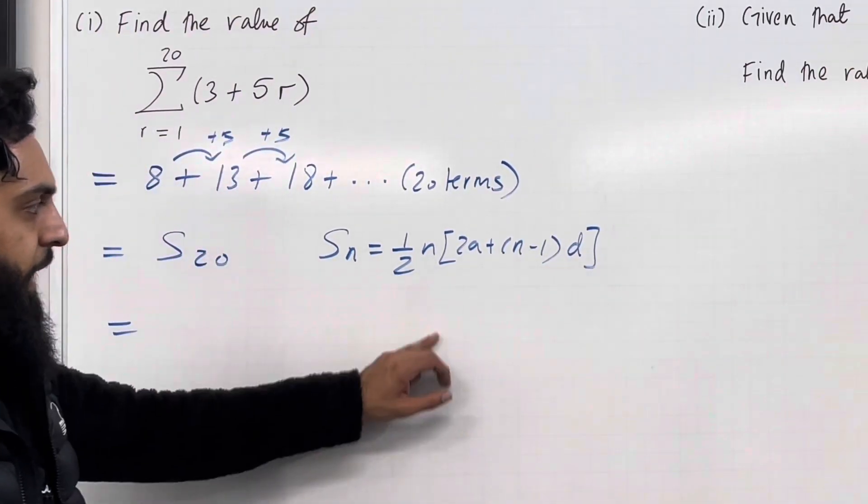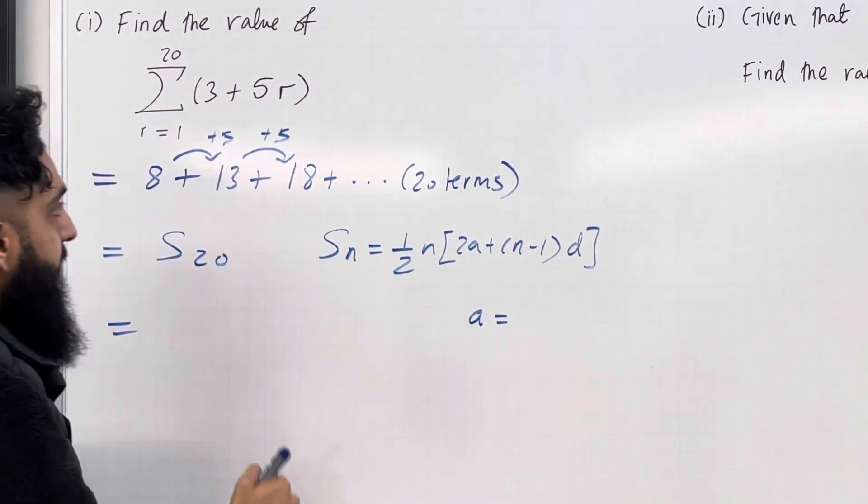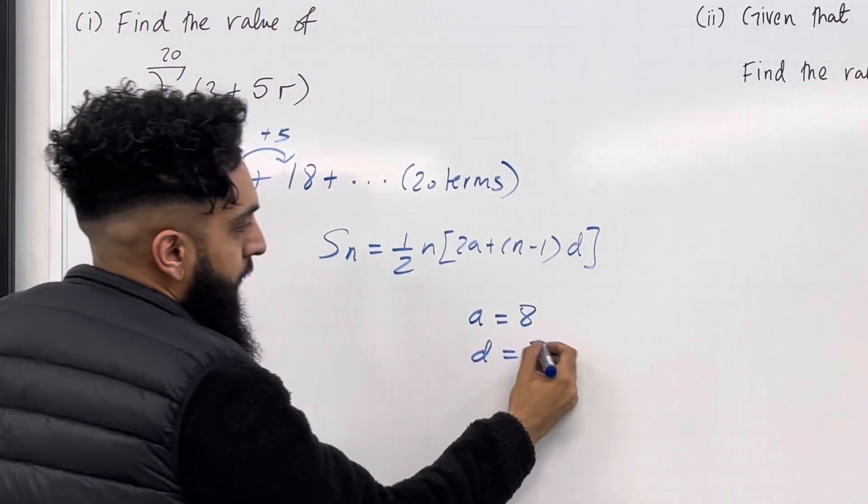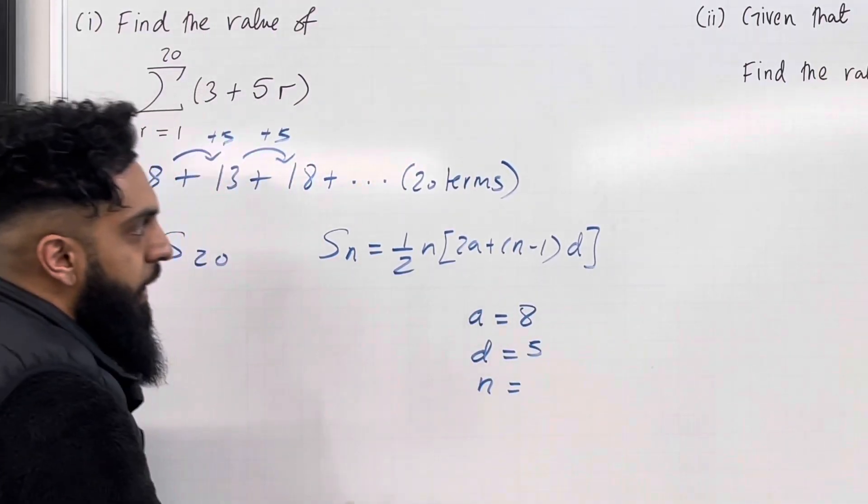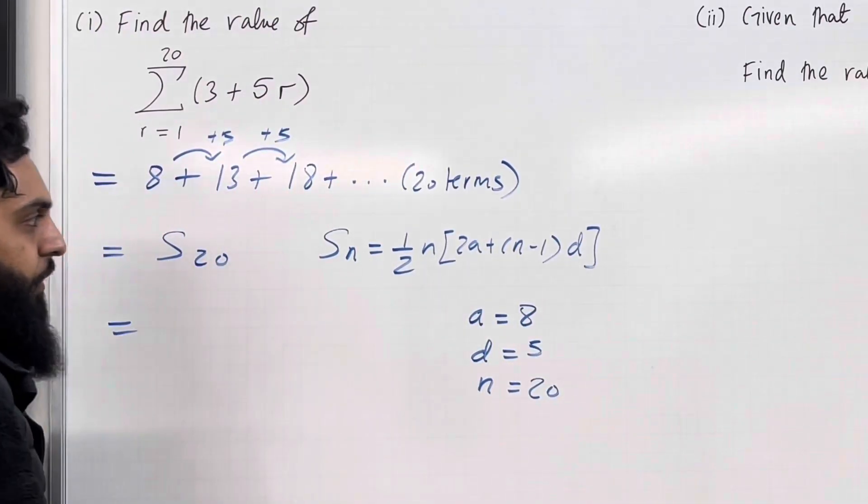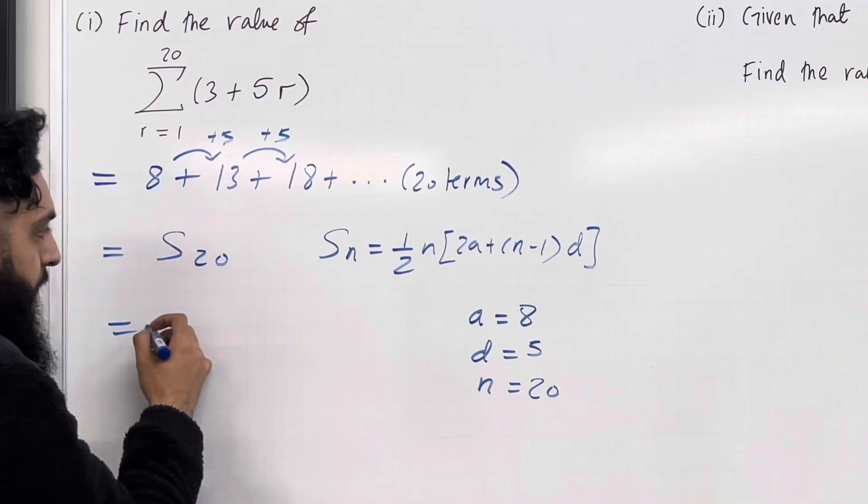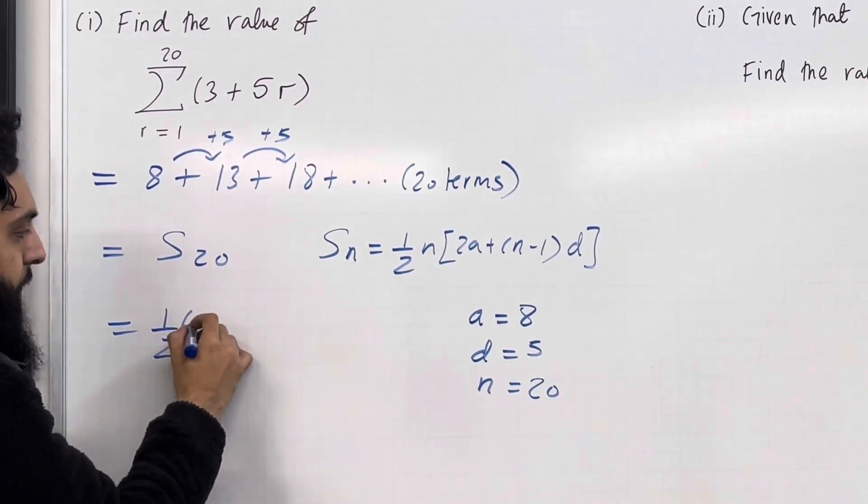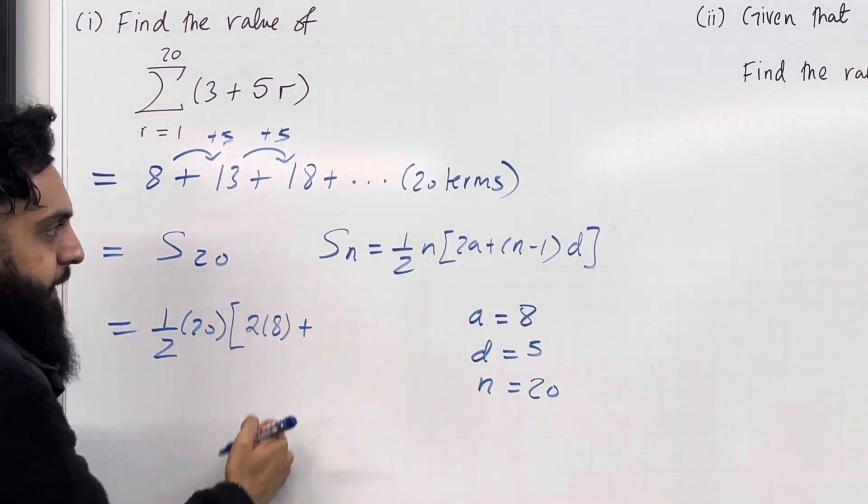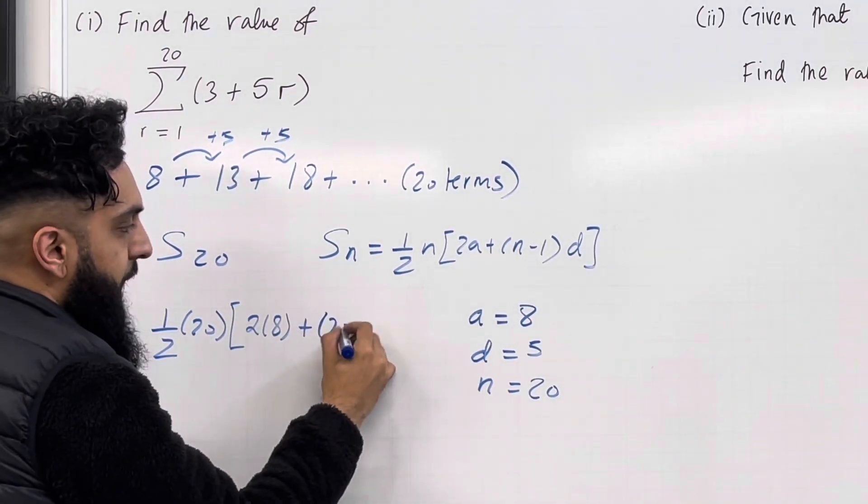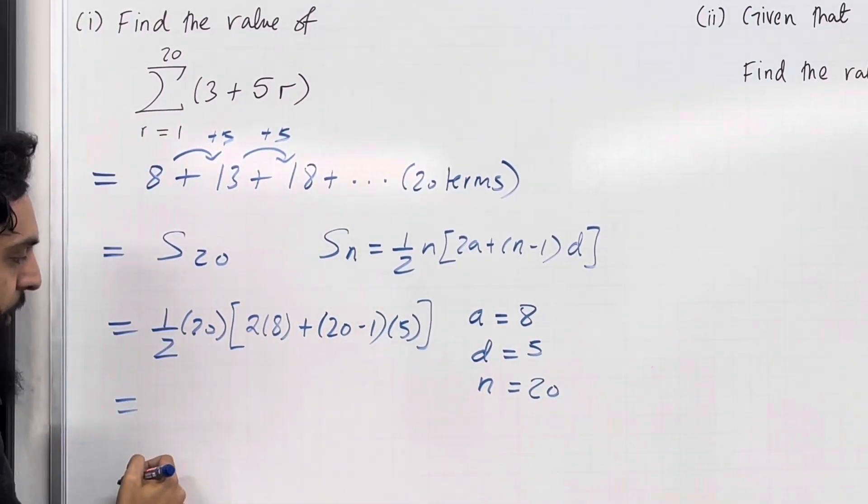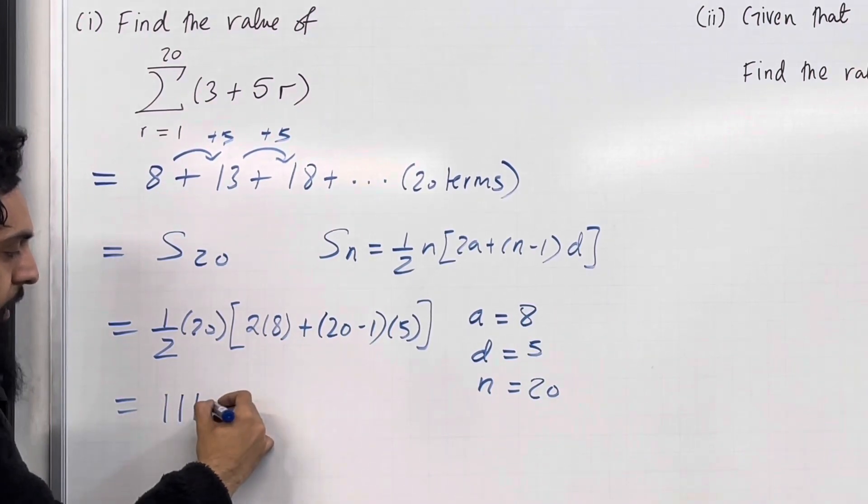Right, so we have a, the first term of this arithmetic series is 8. D, the common difference is 5. And n, the number of terms is 20 terms. So I'm going to substitute all of these into the SN formula for an arithmetic series. So we've got S20 is equal a half multiplied by 20. So if I put this into my calculator, I get 1110.